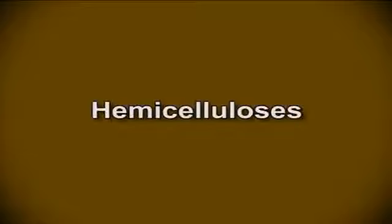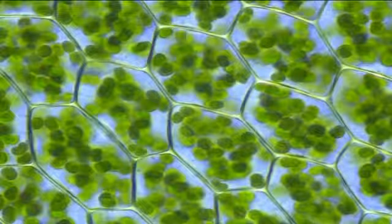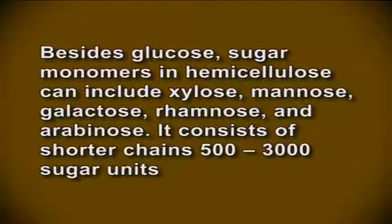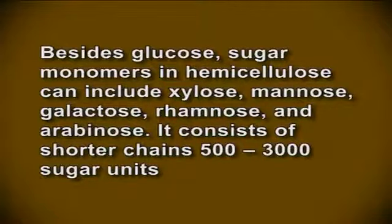The next polysaccharide is hemicellulose. Hemicellulose refers to substances which occupy the space between the cellulose fibers within plant cell walls. They are insoluble in water but soluble in alkali. Some hemicelluloses are composed of pentoses and others contain hexauronic acids. Besides glucose, sugar monomers in hemicellulose can include xylose, mannose, galactose, rhamnose, and arabinose. It consists of shorter chains ranging from 500 to 3000 sugar units.